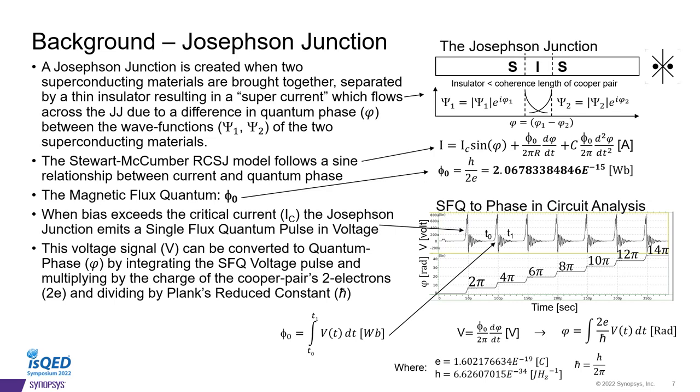The primary building block of superconducting electronics is the Josephson junction. A Josephson junction is created when two superconducting materials are brought together. Between these two superconductors is an insulator, where the thickness is no greater than the coherence length of a Cooper pair. By bringing the superconductors together in this manner, it forms what is known as a supercurrent, due to the quantum phase difference between the two wave functions, ψ1 and ψ2.